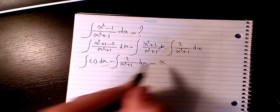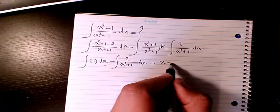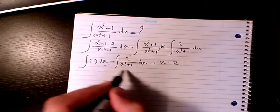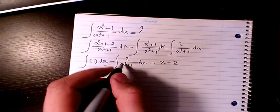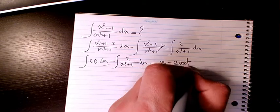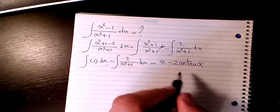The integration of the second one is going to be negative 2, and dx over x square plus 1. The integration of dx over x square plus 1 is arctan x.